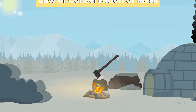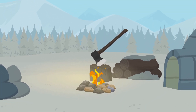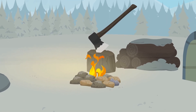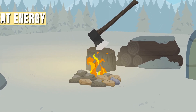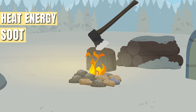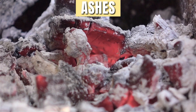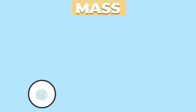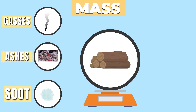An example of the law of conservation of mass is when firewood is burnt. When this happens, a portion of matter is converted into heat energy, soot, gases, and the rest into ashes. The sum of soot, gases, and ashes is equal to the original mass of the firewood prior to being burnt.